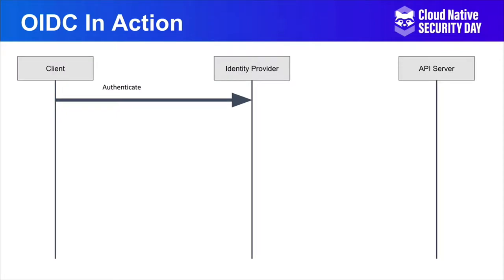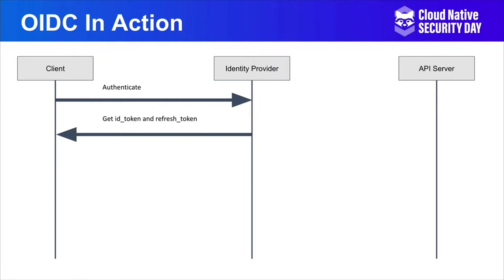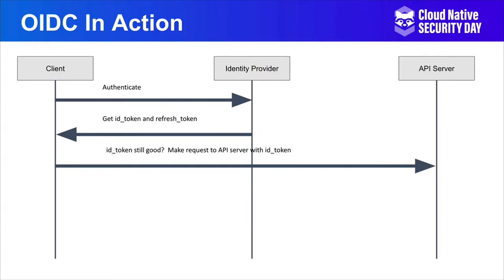So how does OpenID Connect work? First, you authenticate to your identity provider. This part is completely non-standard — it's dependent entirely on your client and your identity provider. The identity provider is going to give you two tokens: an ID token and a refresh token. The ID token gets you into the party; the refresh token gets you a new ticket when the time comes. If the ID token is still good, when you make a request to the API server, you just put that ID token right into the request — this is what's called a bearer token. This is a security issue, because if somebody compromises that token, they can use it against your API server, which is why it's so important to have short-lived tokens.